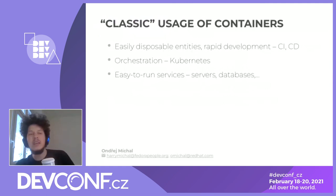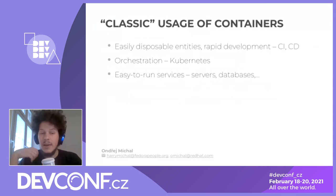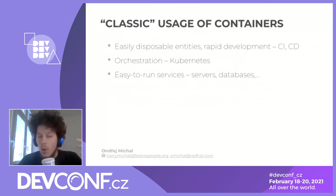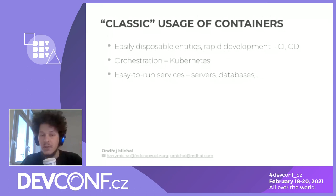So what is the classic usage of containers? They are mainly used as easily disposable entities, which is good for rapid development — CI, CD — and they are used in orchestration, so we've all heard about Kubernetes. Overall, they make it easy to run services. If you want to spin up a web server or a game server — let's say for Minecraft — you don't want to download all the binaries; you just find an image, set it up, and you're good to go.